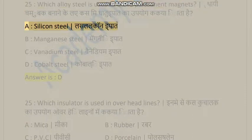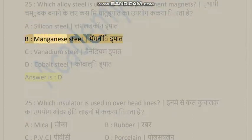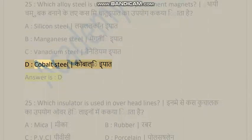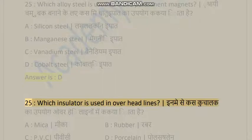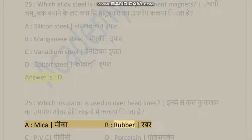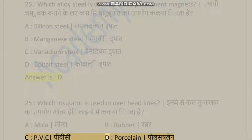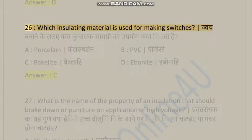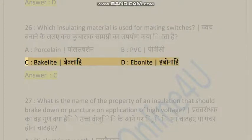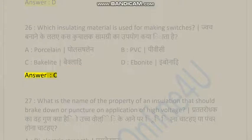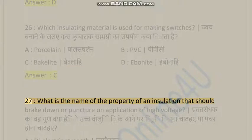Question 25: Which alloy steel is used to make permanent magnets? A) Silicon steel, B) Manganese steel, C) Vanadium steel, D) Cobalt steel. Answer is D. Question 26: Which insulator is used in overhead lines? A) Mica, B) Rubber, C) PVC, D) Porcelain. Answer is D.